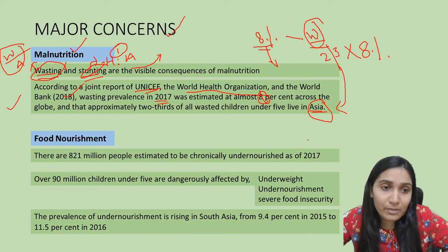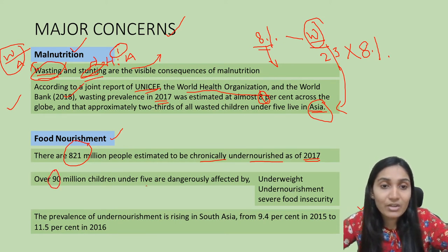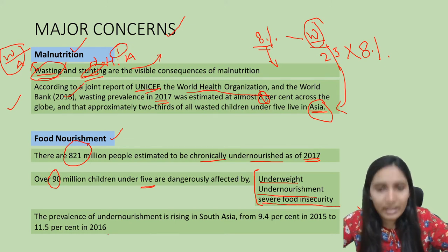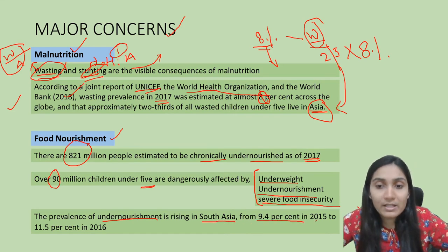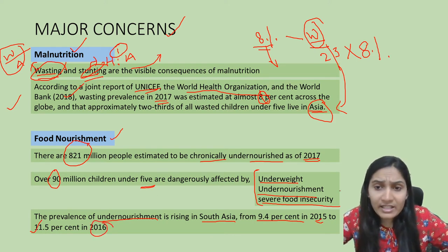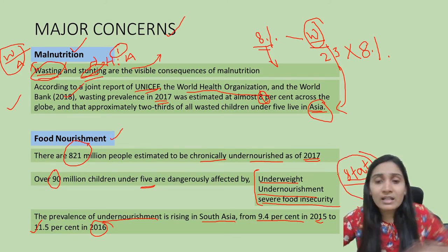The second problem is food nourishment. There are 821 million people estimated to be chronically undernourished as of 2017. Over 90 million children under the age of 5 years are dangerously affected by underweight, undernourishment, and severe food insecurity. The prevalence of undernourishment is rising in South Asia, from 9.4% in 2015 to 11.5% in 2016.